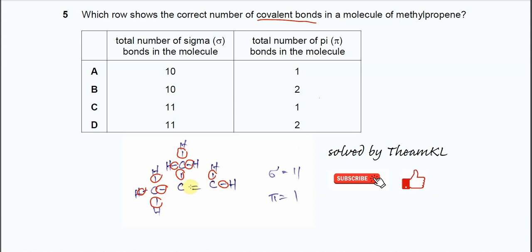You see this double bond? Now, in this double bond, we know that it has one sigma bond and one pi bond. Just now, it's 10 sigma bonds plus one sigma bond. So, total is 11 sigma bonds. The pi bond is just one only. Therefore, answer is C.